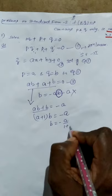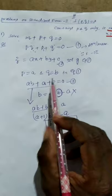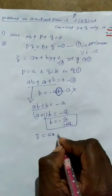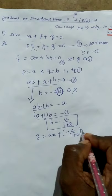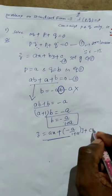After finding the value of b, we substitute it in equation 2. That means z = ax + by + c. In place of b, we write -a/(1+a). Therefore: z = ax + [-a/(1+a)]·y + c. This is the complete solution for equation 1.